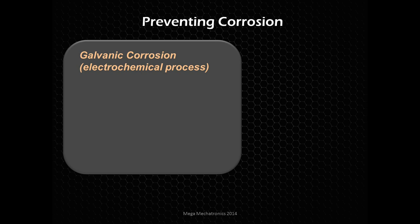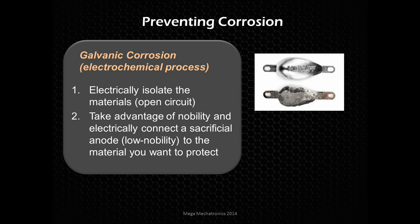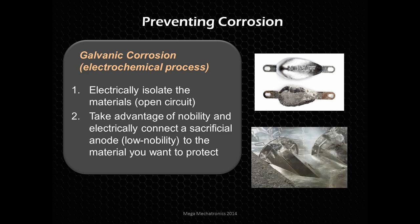For galvanic corrosion, you need to electrically isolate dissimilar materials — break that circuit so the process can't take place. Or you can take advantage of those electropotential differences by connecting a sacrificial anode: something with low nobility that you don't care about if it erodes, but that will protect the base material. Here's an example of a zinc anode installed on an outboard engine. Here's a hot galvanizing process for basketball goal posts going out in the weather — that zinc coating will erode over time and protect the base metal.